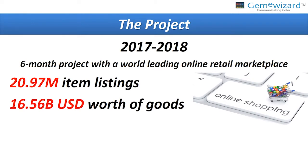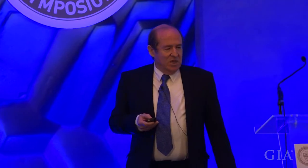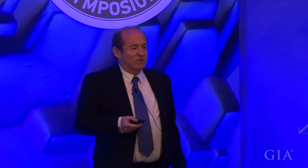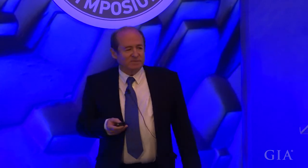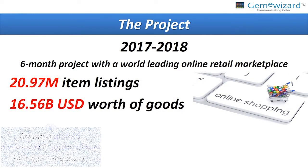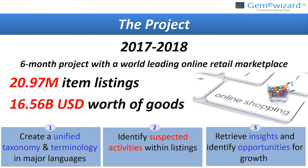In the last two years, we were asked by a major leading retail marketplace to analyze their data. We gathered huge data of 20 million items with a value of about $16 billion. The first thing we do, automatically of course, is create unified taxonomy and terminology in all languages. Secondly, we identify the okay items and the suspected activities and listings. Then we retrieve insights and identify opportunities within the information.